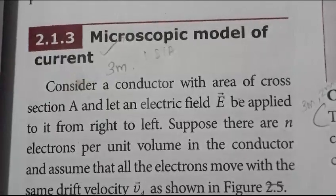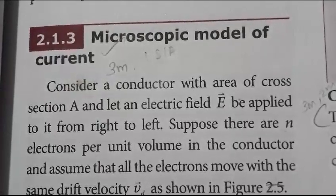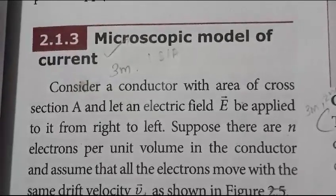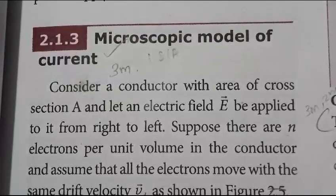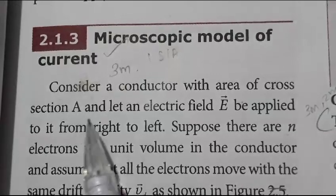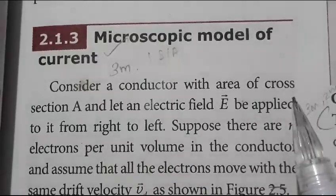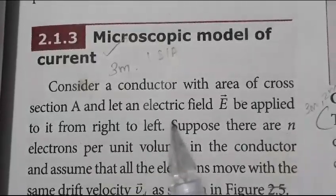Hello friends, now we are going to discuss the microscopic model of current and obtain the general form of Ohm's law in the first volume of 12th standard. Consider a conductor with the area of cross section A.